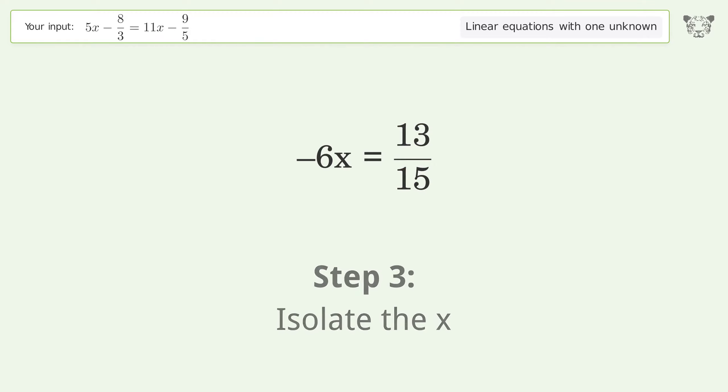Isolate the x by dividing both sides by negative 6. Cancel out the negatives, simplify the fraction, and simplify the arithmetic.